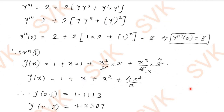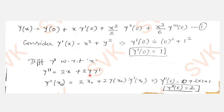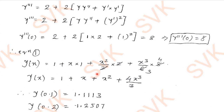To find y'''(x₀), differentiate y'' again with respect to x: y''' = 2 + 2[y·y'' + (y')²] (applying the product rule). Substituting x₀ = 0, y(x₀) = 1, y''(x₀) = 2, y'(x₀) = 1: y'''(0) = 2 + 2[1·2 + 1²] = 2 + 2(3) = 8.